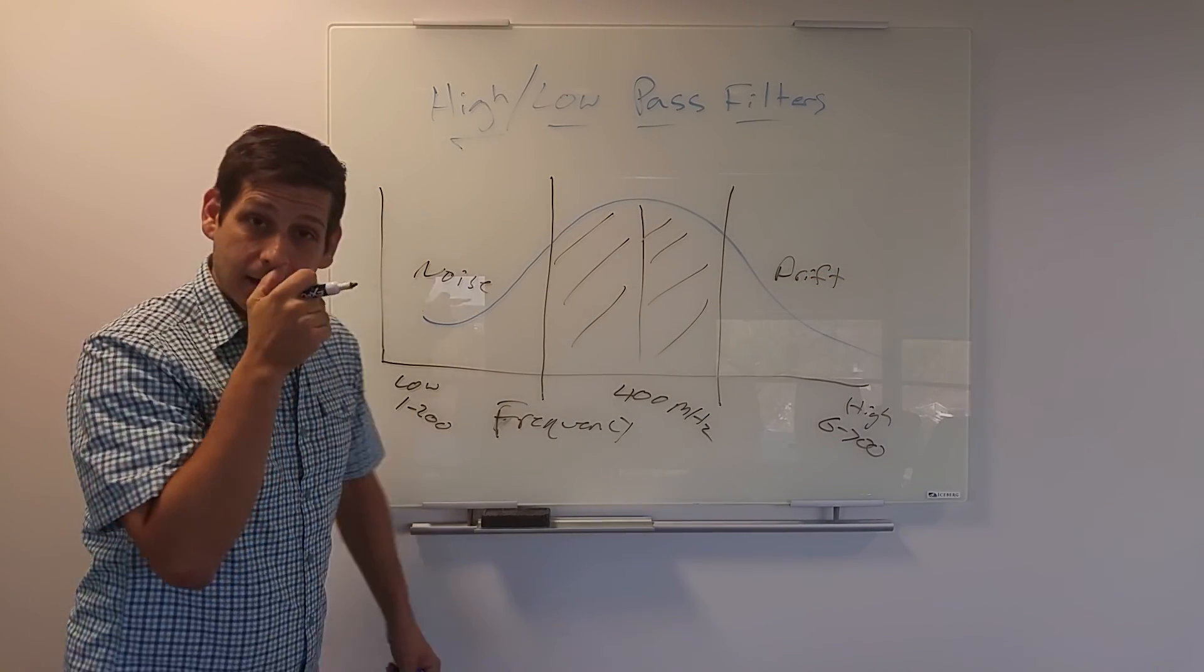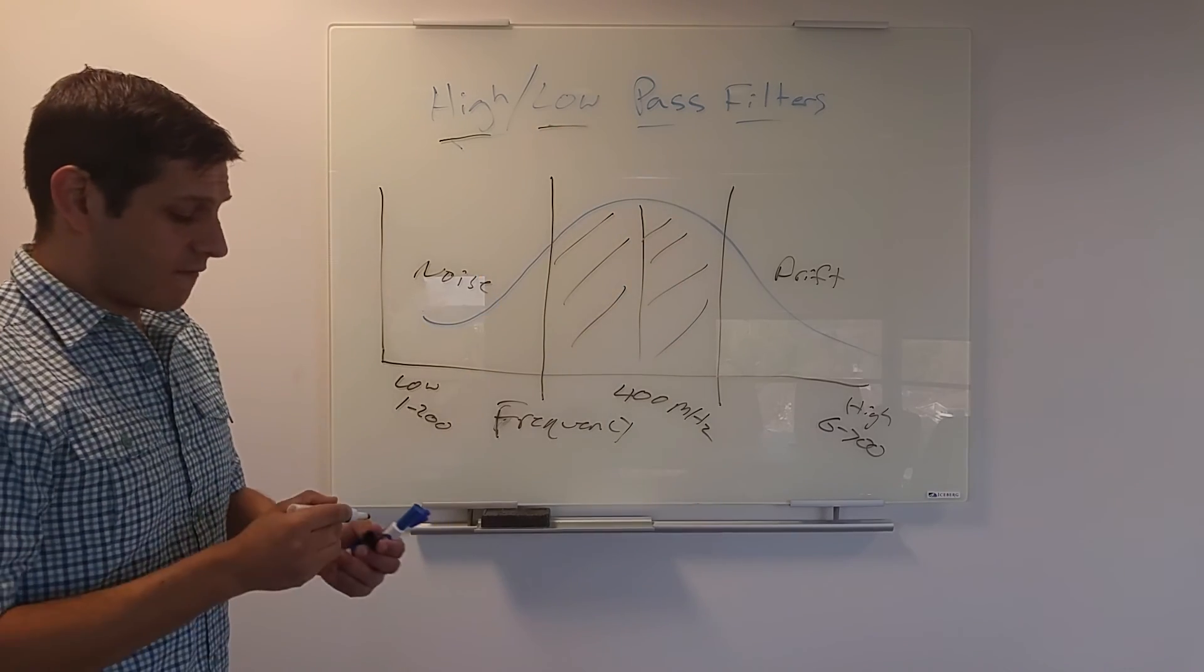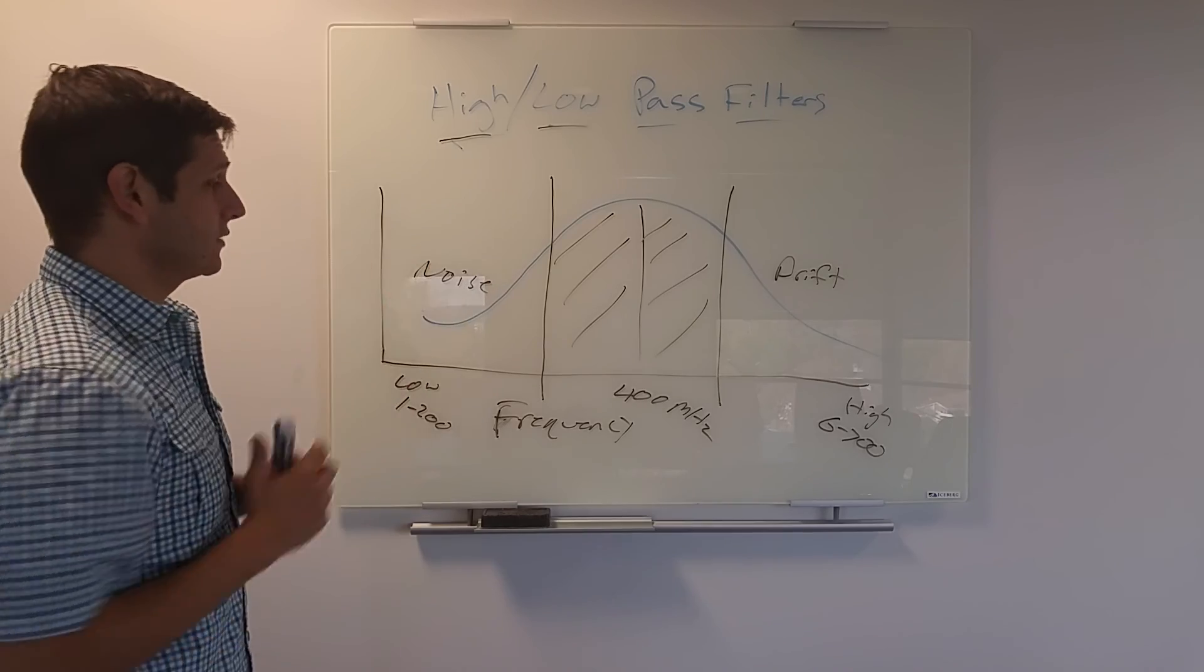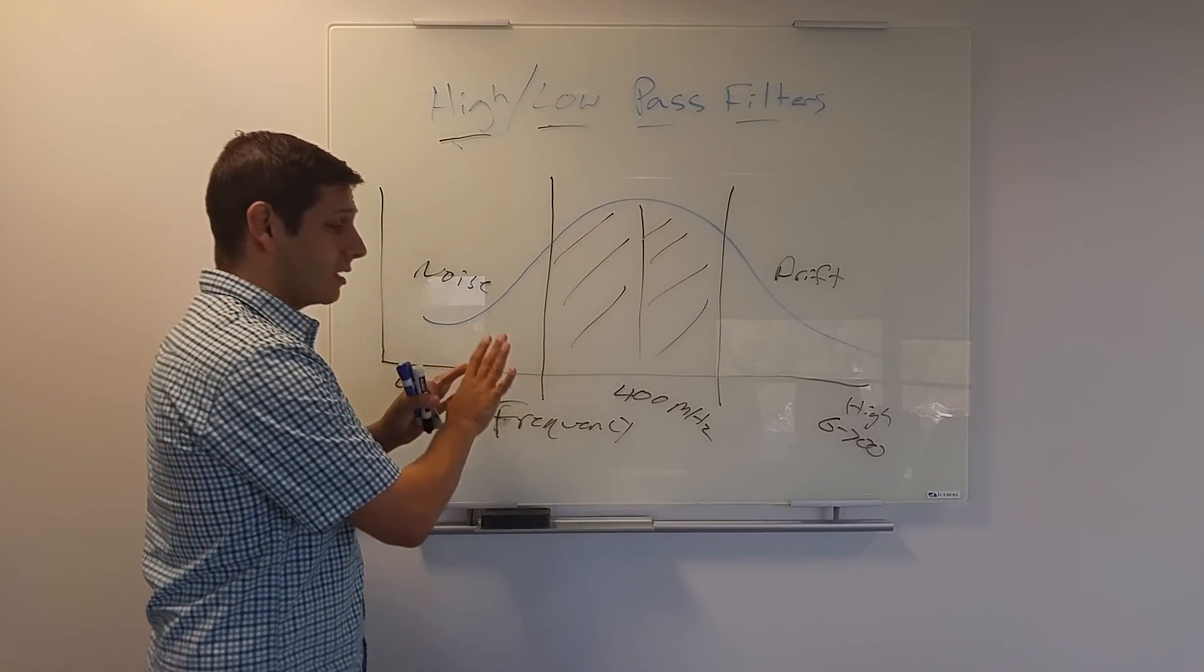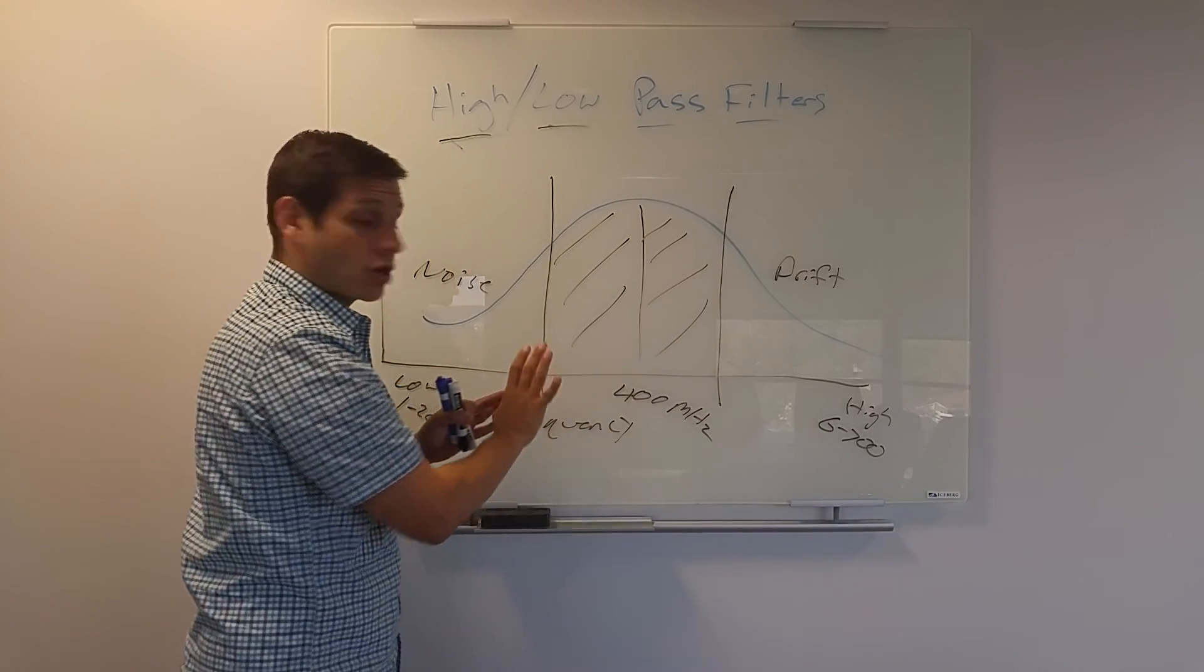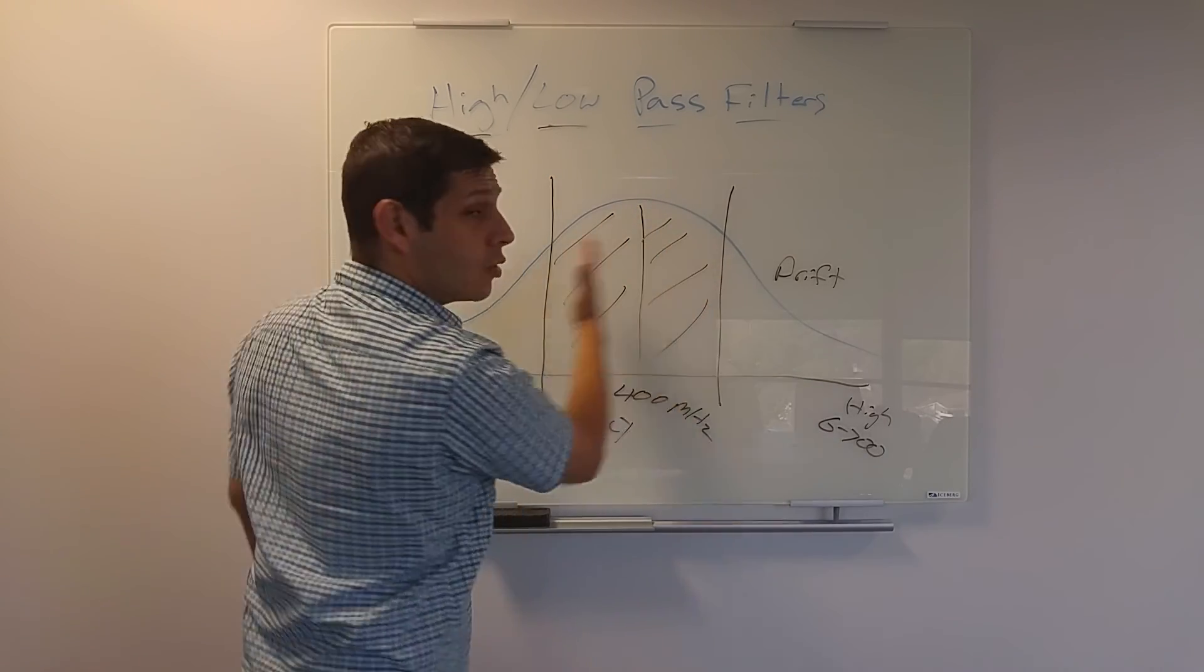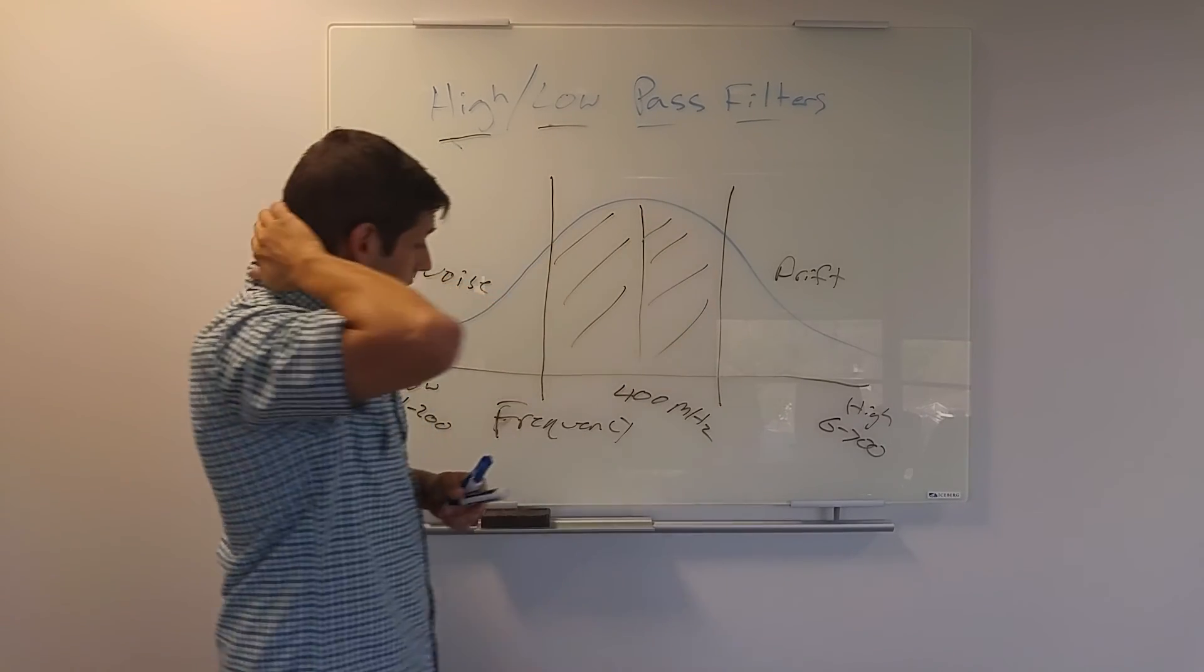And in order to do that, you have to apply a high and or low pass filter to your data. So what's a high pass filter? A high pass filter means anything that's a higher frequency than what you stipulate is going to remain. A low pass is anything lower than a certain frequency that you stipulate is going to remain.